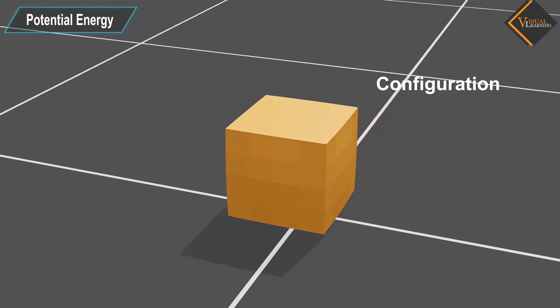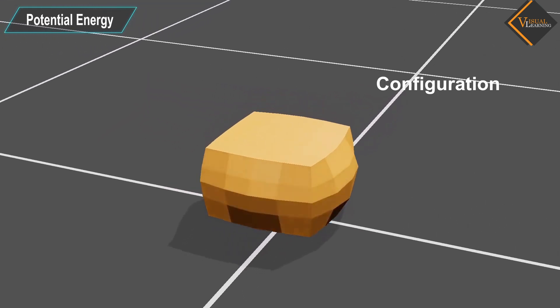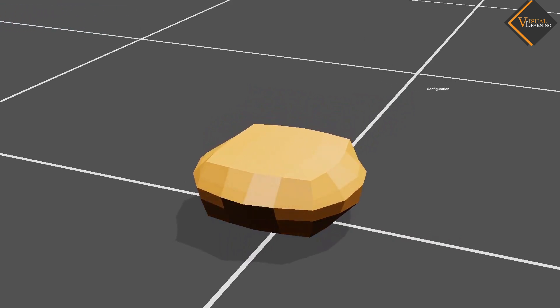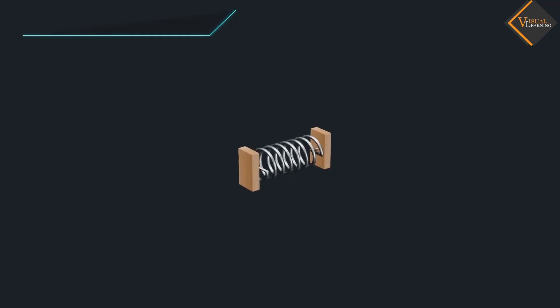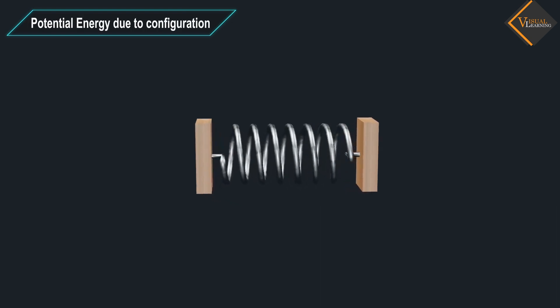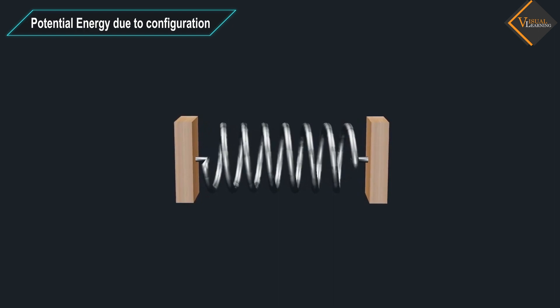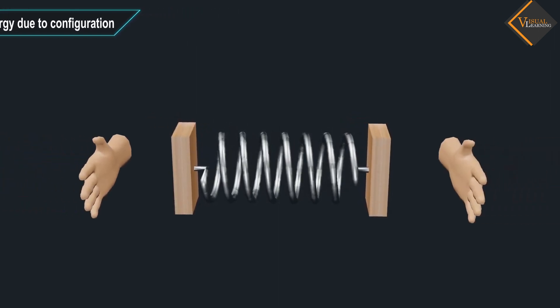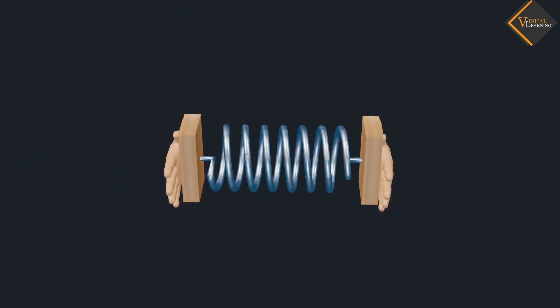Let us first understand potential energy due to configuration of a body. In the animation, we see a spring which is connected to rigid support with its ends. When we press the spring from both ends, it shrinks.